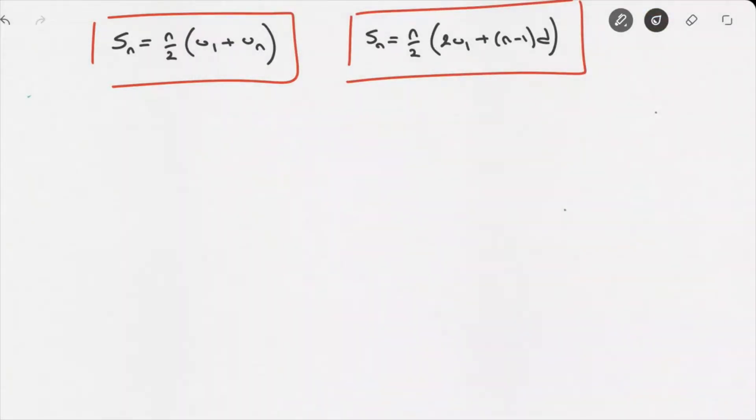And here's the good news. No matter which of the two formulas you choose in an exercise they both always work. Nevertheless at times you'll go faster and you'll be less likely to make a mistake if you choose one formula rather than the other.